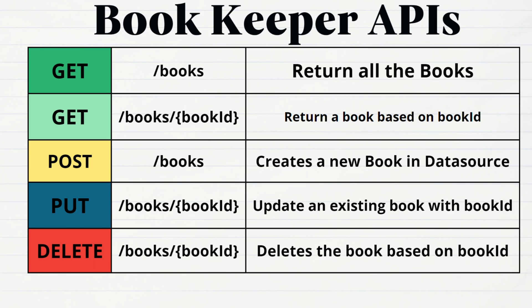Based on the HTTP method, separate logic will be invoked. To update a specific book — for example, updating the price, version, or any other information of an already existing book — a PUT HTTP request can be sent to the URI slash books slash book ID with the details you want to update. The URI is the same as getting a single book; the server identifies whether to update or get a specific book based on the HTTP method, whether it is GET or PUT. If you want to remove a specific book, a DELETE HTTP request to the URI slash books slash book ID will be sent, removing the resource from the data source with that particular book ID.